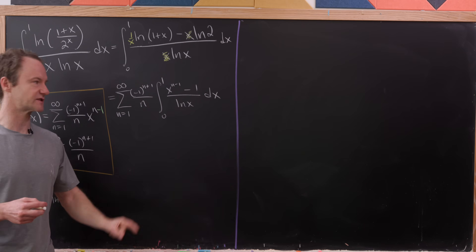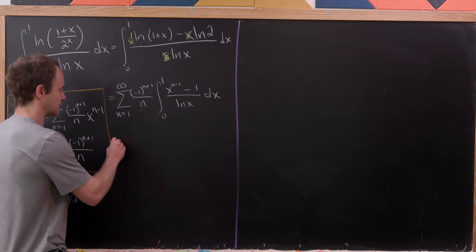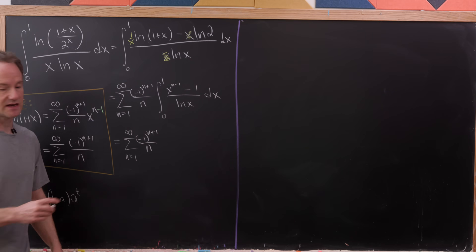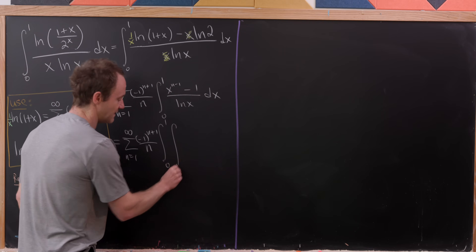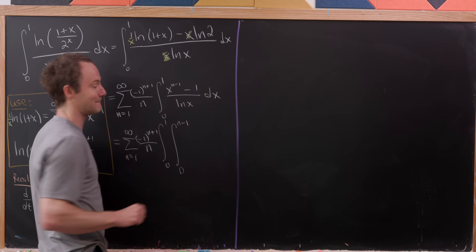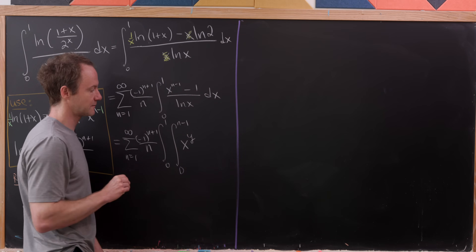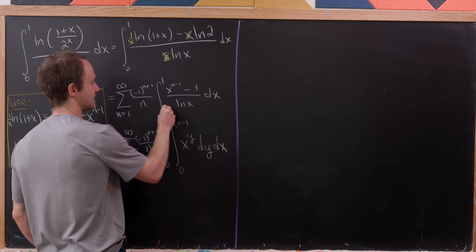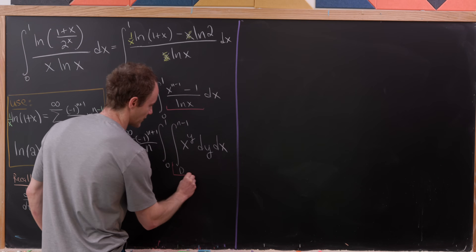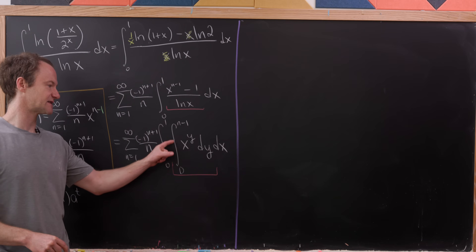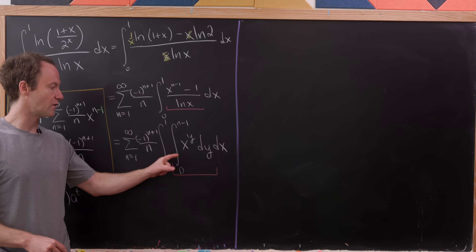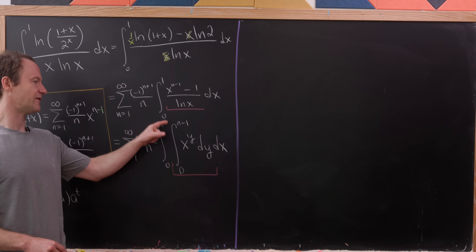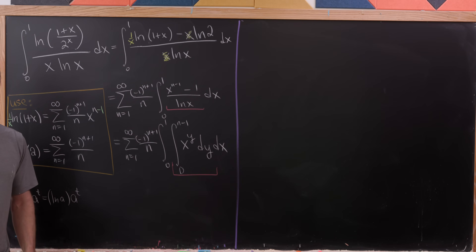So we'll have the sum as n goes from 1 to infinity of (-1)^(n+1) / n, times the integral from 0 to 1, times the integral from 0 to n−1 of x^y dy dx. That's because taking the anti-derivative of x^y with respect to y gives x^y / ln(x), evaluated from y=0 to y=n−1, which recovers x^(n−1) minus 1 over ln(x).